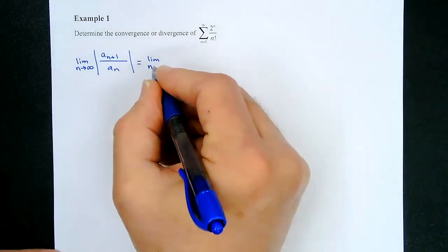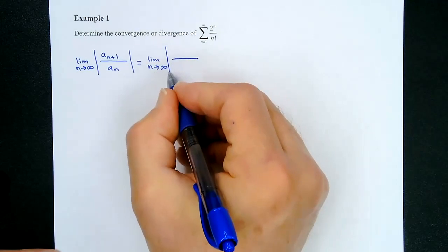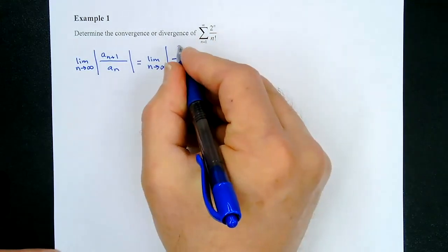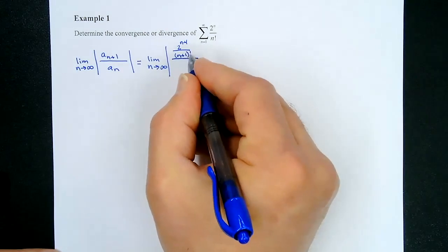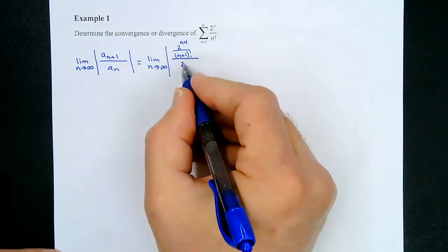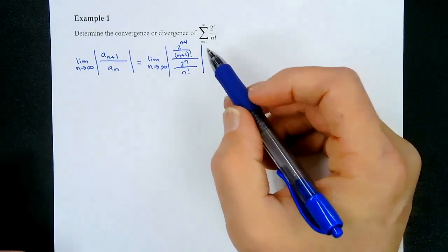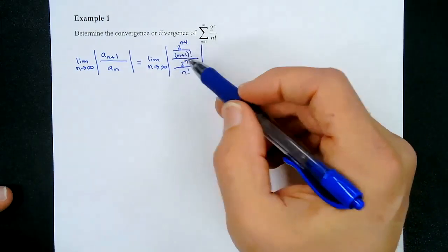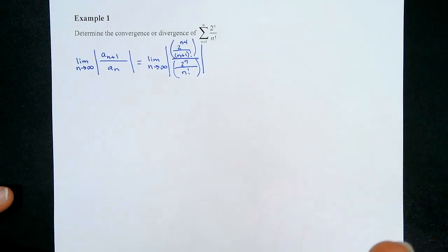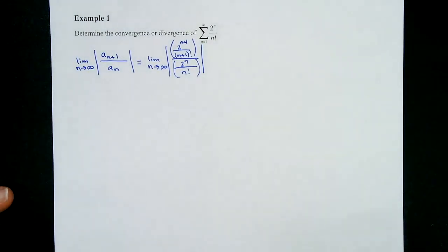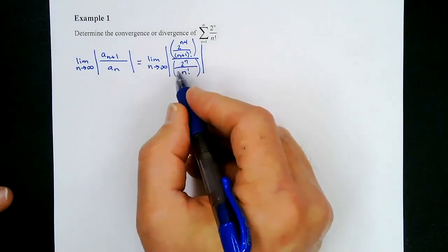What does that equal in this problem? This becomes the limit as n approaches infinity of: in the numerator, 2^(n+1) over (n+1)!, and in the denominator, 2^n over n!. We're taking the absolute value of that. Since this is a fraction divided by a fraction, we multiply by the reciprocal, giving us: [2^(n+1) over (n+1)!] times [n! over 2^n].